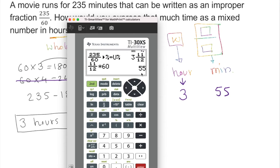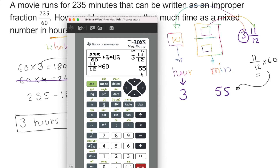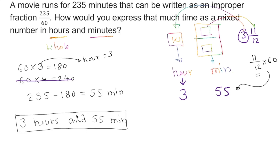So 3 and 11/12 means 3 hours, and multiplying 11/12 by 60 gives us 55 minutes — the same result as before. Whether you use trial and error or the calculator, the answer is 3 hours and 55 minutes.